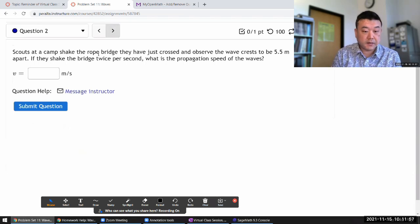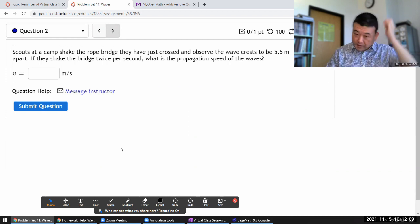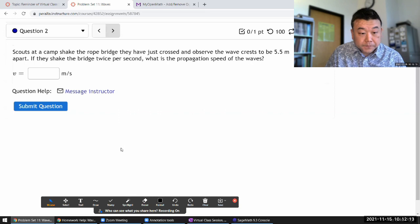Scouts at a camp shake the rope bridge they have just crossed and observe the wave crests to be 5.5 m apart. So here they are telling you what the wavelength is.